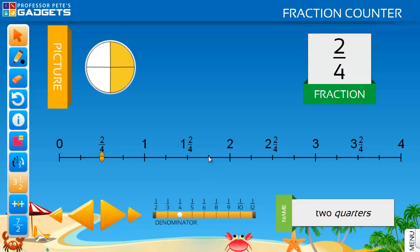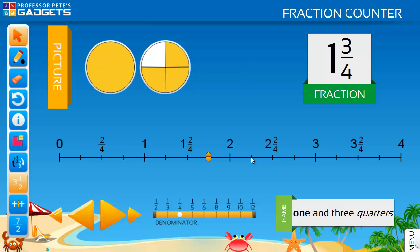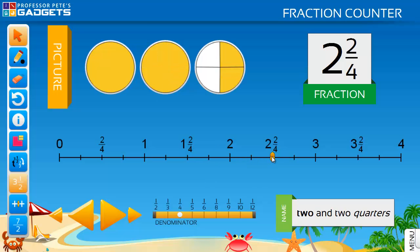Alternatively, jump the marker to the desired mixed number by simply clicking on the number line.